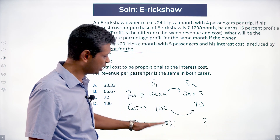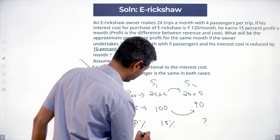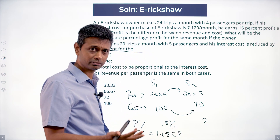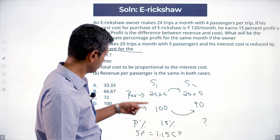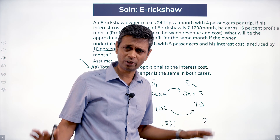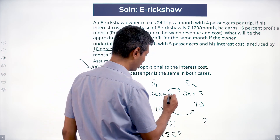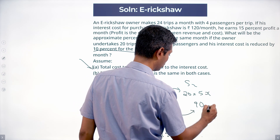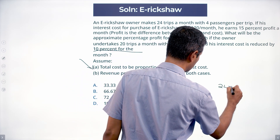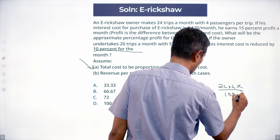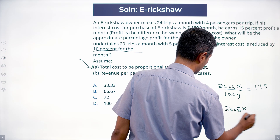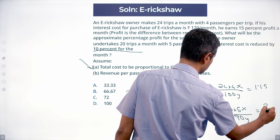If profit percentage is 15%, that means selling price is 1.15 times cost price. So the ratio of selling price to cost price is 1.15 in Scenario 1. What will the ratio of selling price to cost price be in Scenario 2? That's all we're doing. I'll call revenue per passenger x and cost per unit y, so the linkages are very clear.